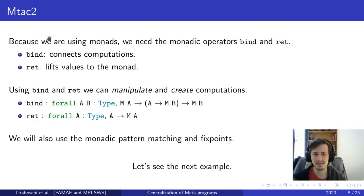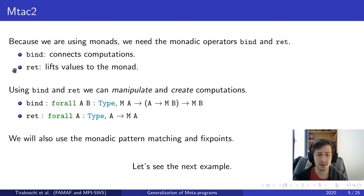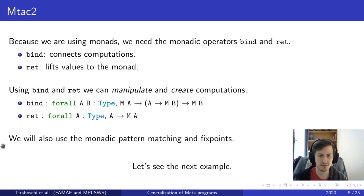Monads require that we use monadic operators. In Mtac2 we use bind and ret: bind will connect the computations while ret will be lifting values into the monad. So using bind and ret we can manipulate and create computations. We won't focus on the signature of bind and ret for now, but just so that you know they have a signature.